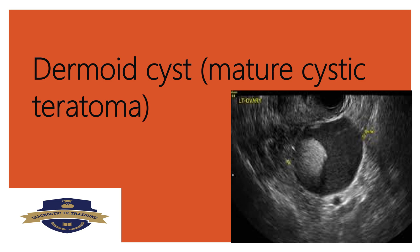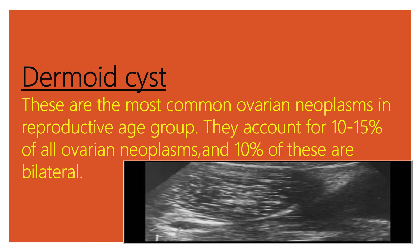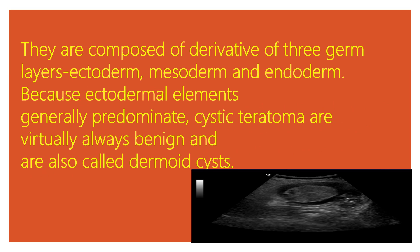Dermoid cysts are the most common ovarian neoplasms in the reproductive age group, accounting for 10–15% of all ovarian neoplasms, and 10% of these are bilateral. They are composed of derivatives of three germ layers: ectoderm, mesoderm, and endoderm. Because ectodermal elements generally predominate, cystic teratomas are virtually always benign, and are also called dermoid cysts.